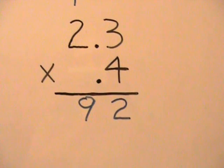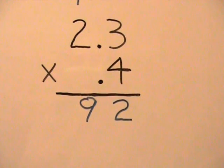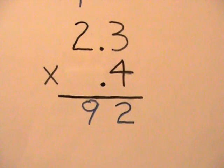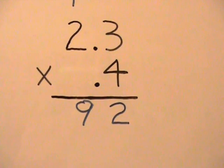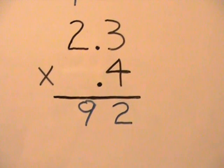Now what we want to do is move the decimal in our answer the same amount of places as it's moved in our problem. In our problem, we have two decimals.